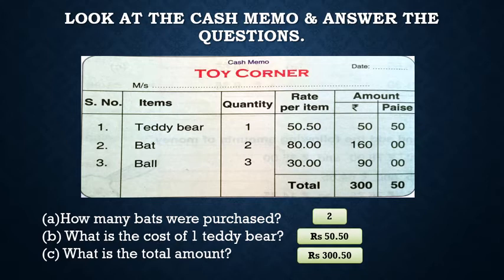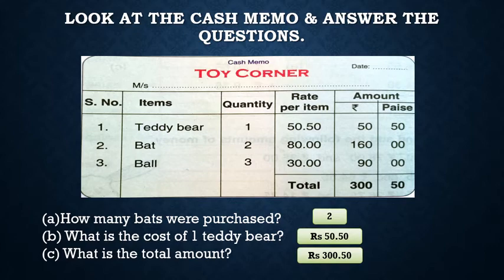Now look at the questions. How many bats were purchased? The quantity is 2. What is the cost of 1 teddy bear? One teddy bear cost is 50 rupees and 50 paise. What is the total amount? 300 rupees 50 paise.